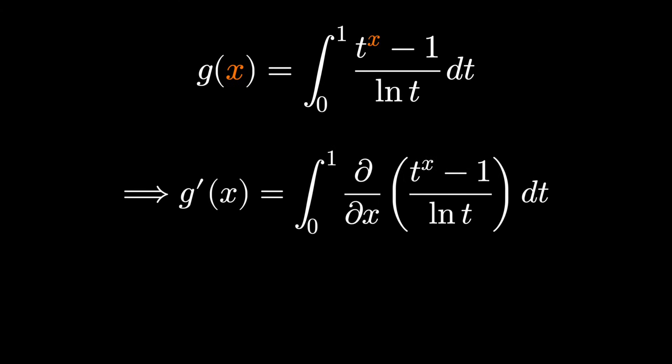Why do it this way? Well, again, for the same reason when we take the derivative of t to the x, it's t to the x natural log t. The derivative of 1 is 0, but the point is that the natural logarithm functions cancel out.